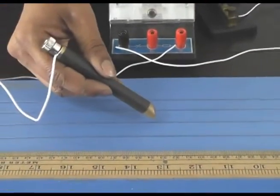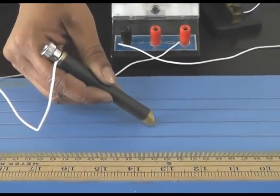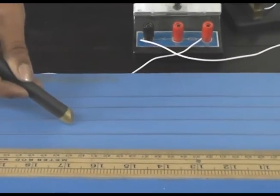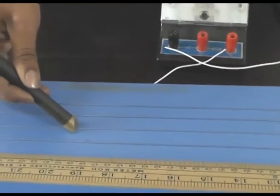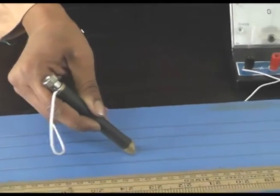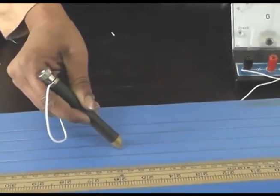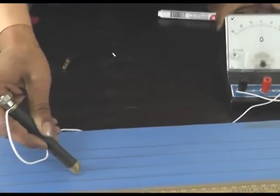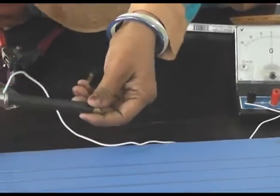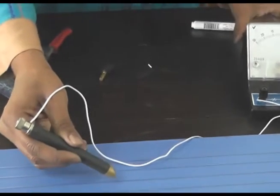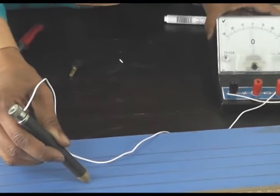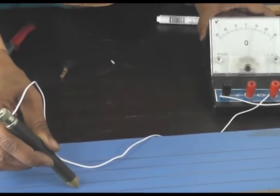So we have to find the balancing point again with the same procedure. I will move this jockey step-by-step on this wire. There we go. Here we go.